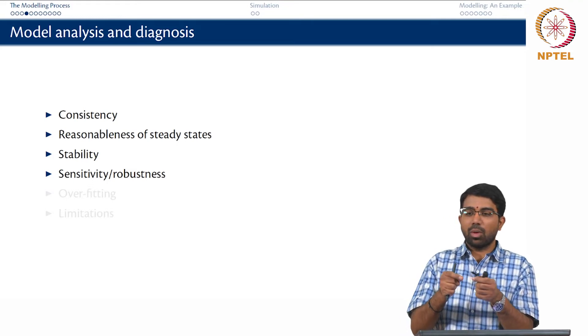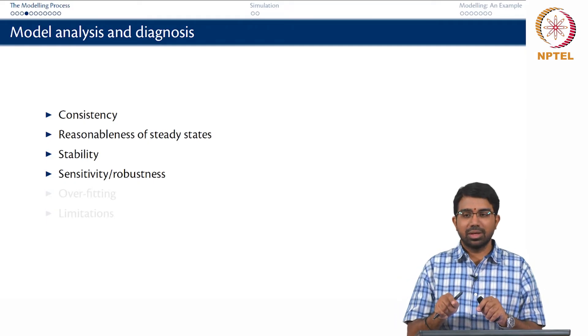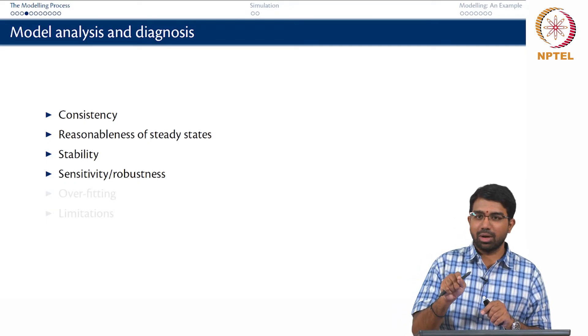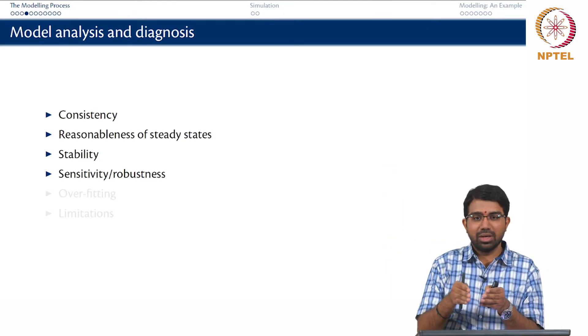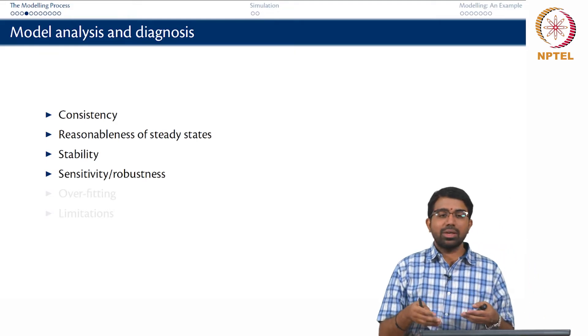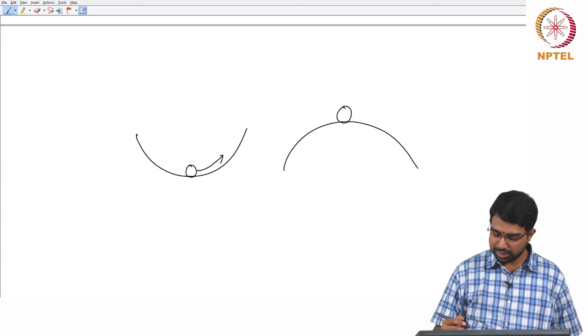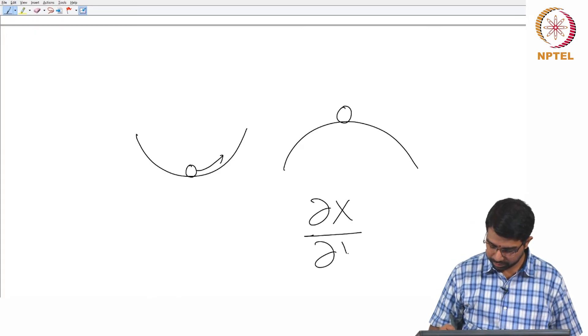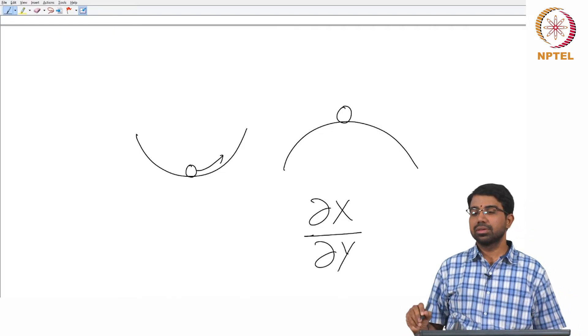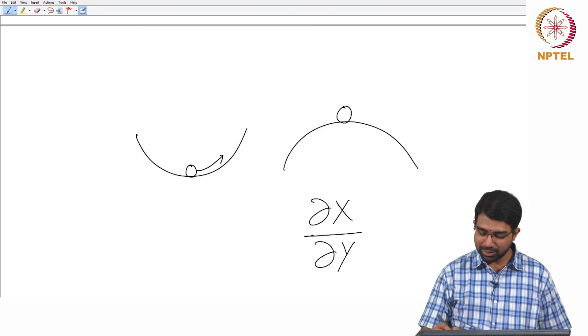Sensitivity is what is my response for a push. If I give a small push to the ball, does it just fly out of the bowl or does it just move a little and so on. And typically, we will worry about sensitivity. The classic way to mathematically define sensitivity will be, this is sensitivity, that is it. This is what sensitivity is, we will look at it more closely later on.